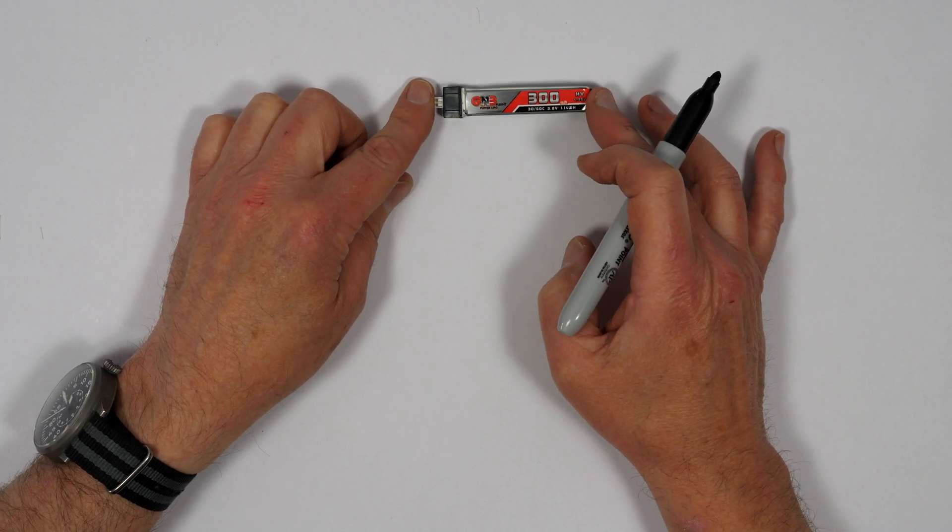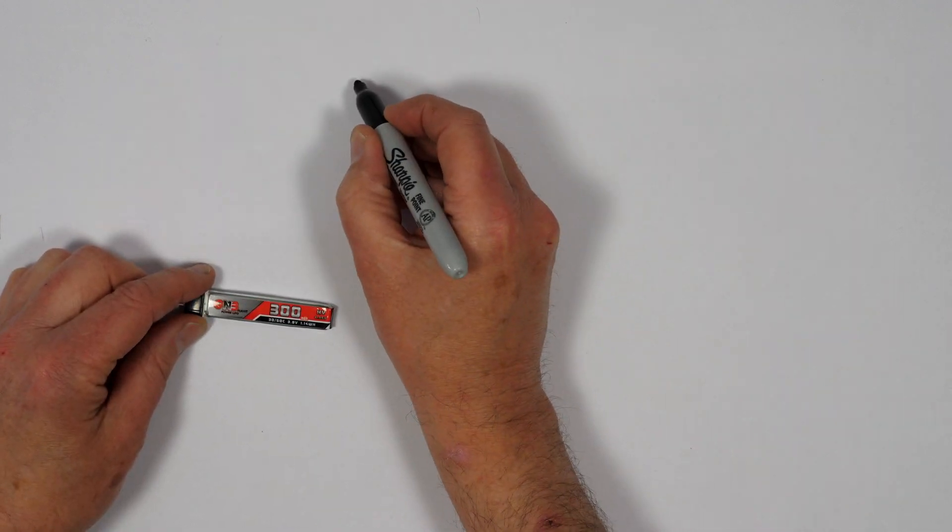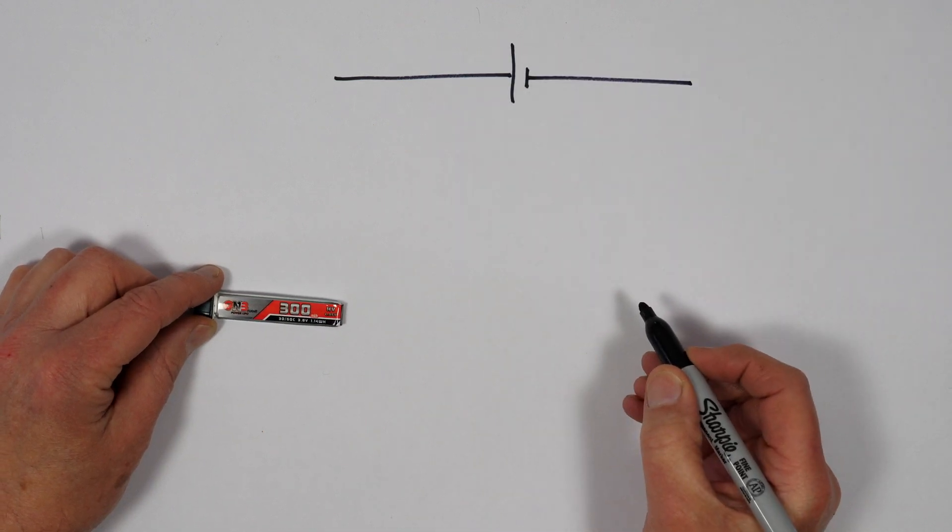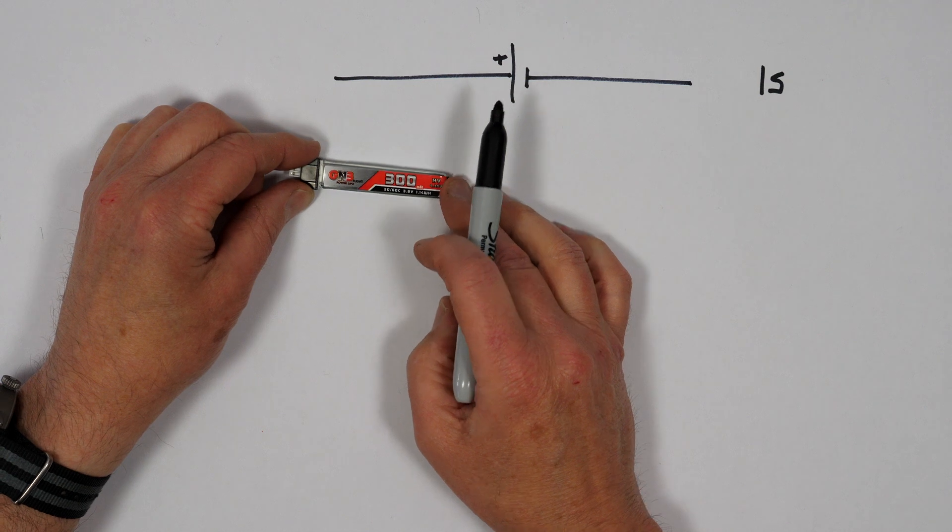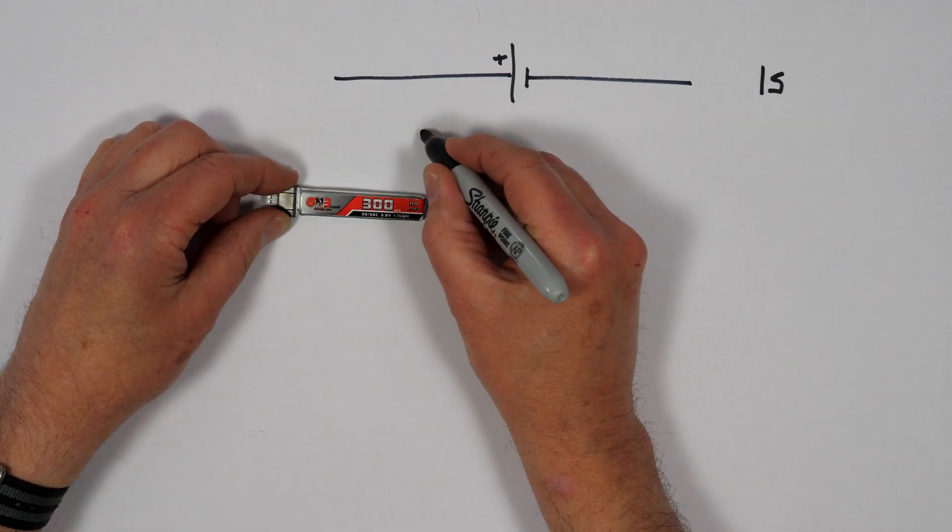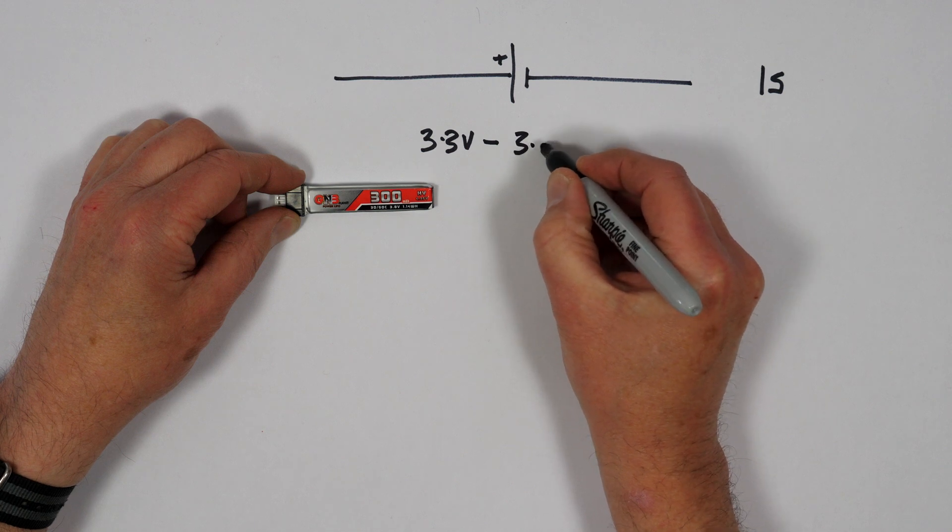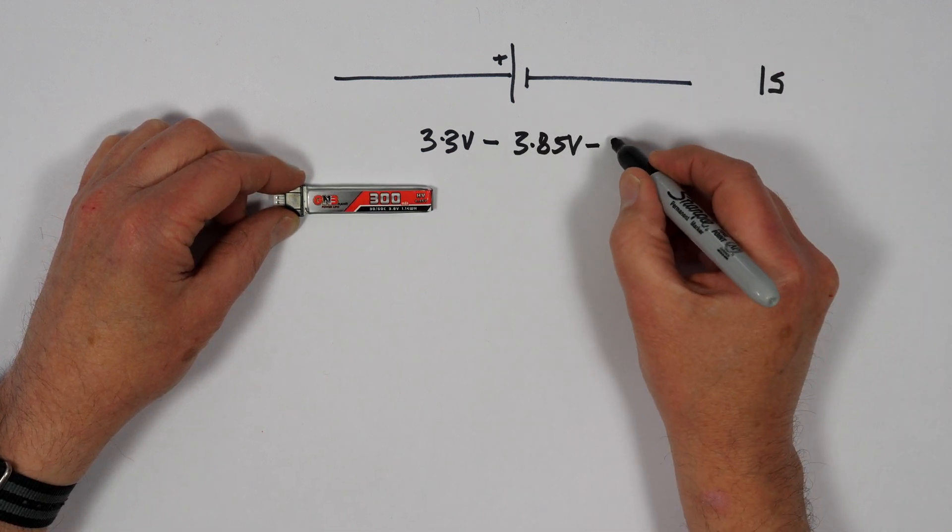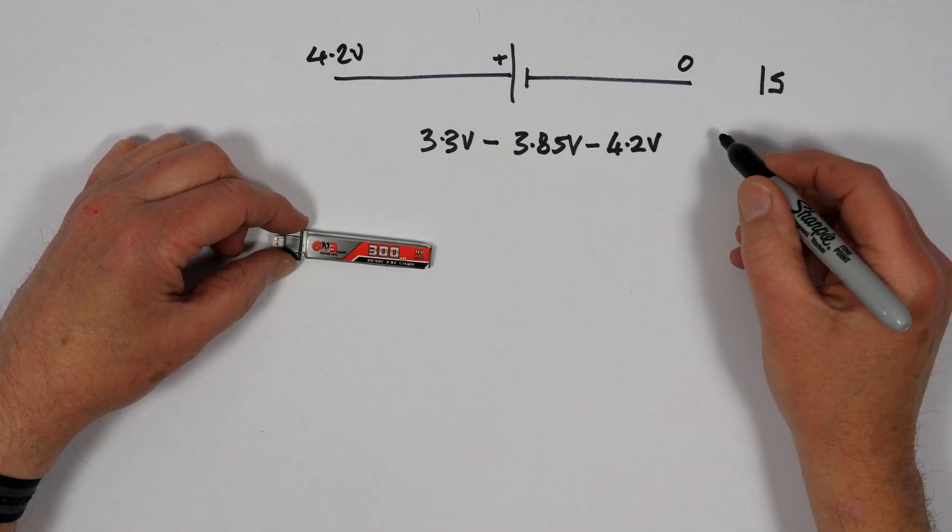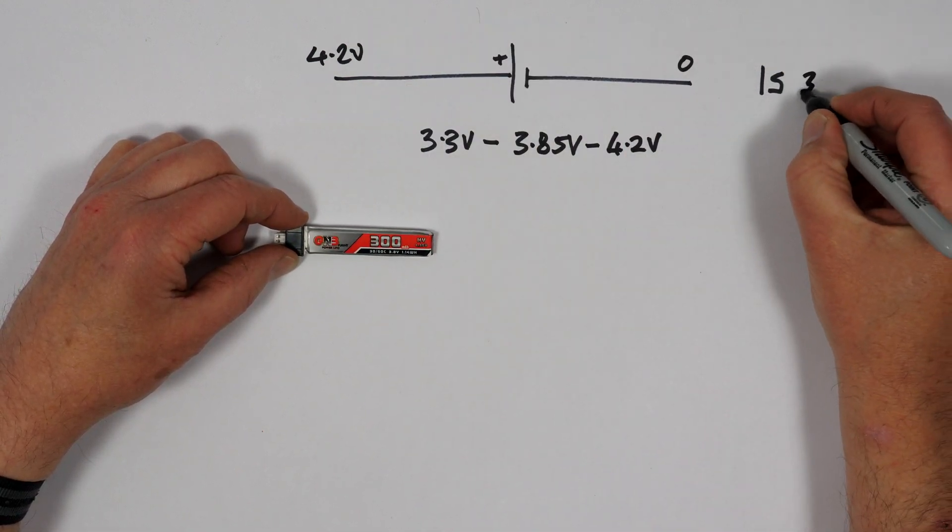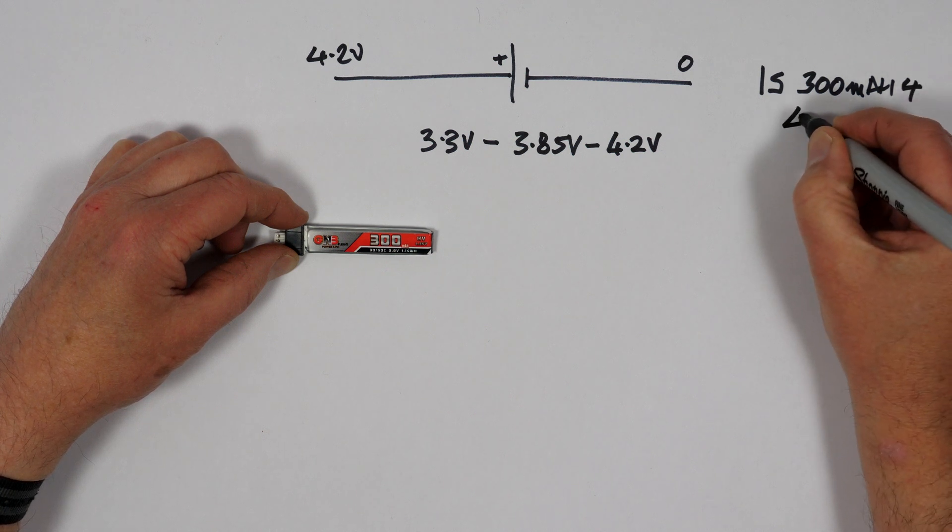This 1S LiPo, in this case a 300mAh GMB LiPo—let's draw this out. That's positive, that's negative. This is 1S, which is what we're trying to charge. The voltage is at its low end 3.3V when fully discharged, in the middle is 3.85V which is storage charge, and when fully charged it's at 4.2V. So you've got 4.2V here and 0V there. This is 1S, 300mAh, 4.2V.